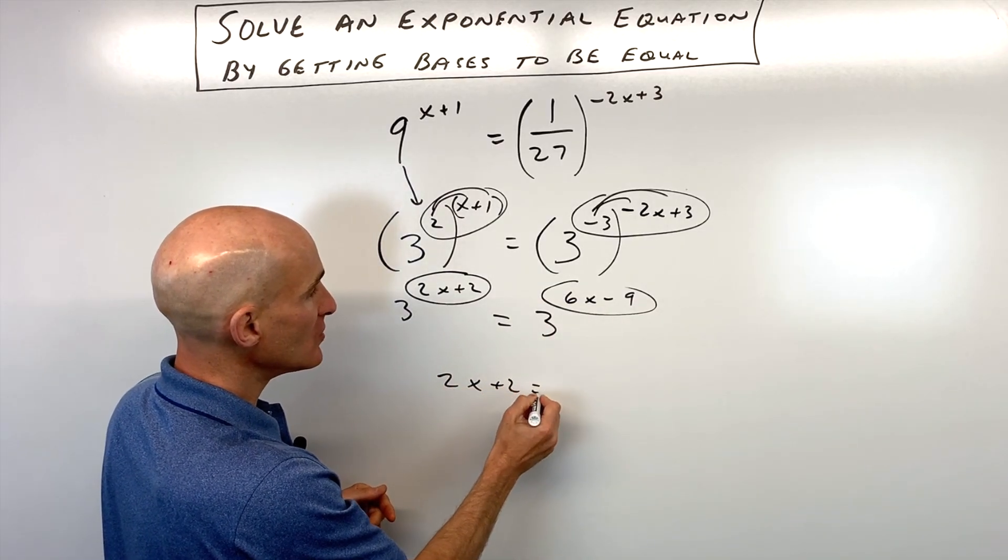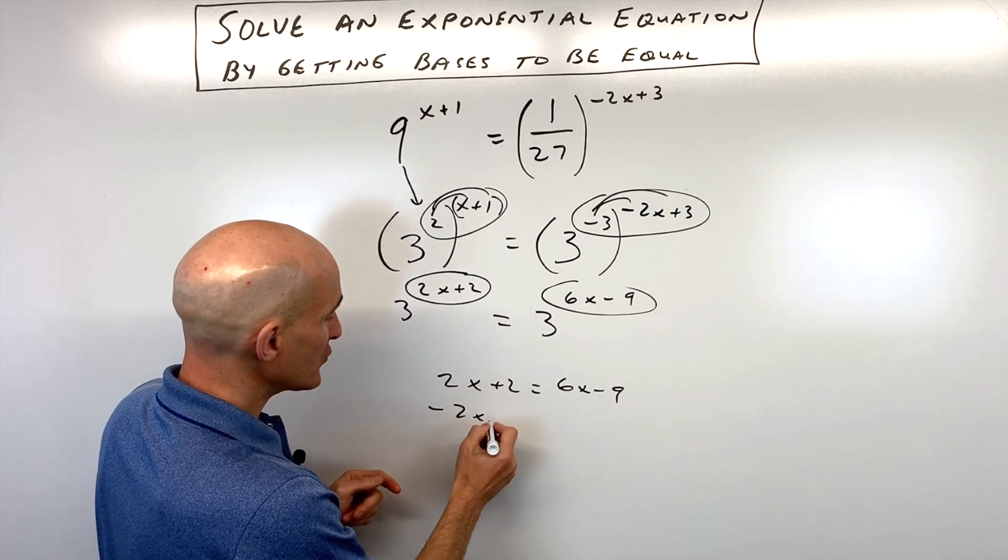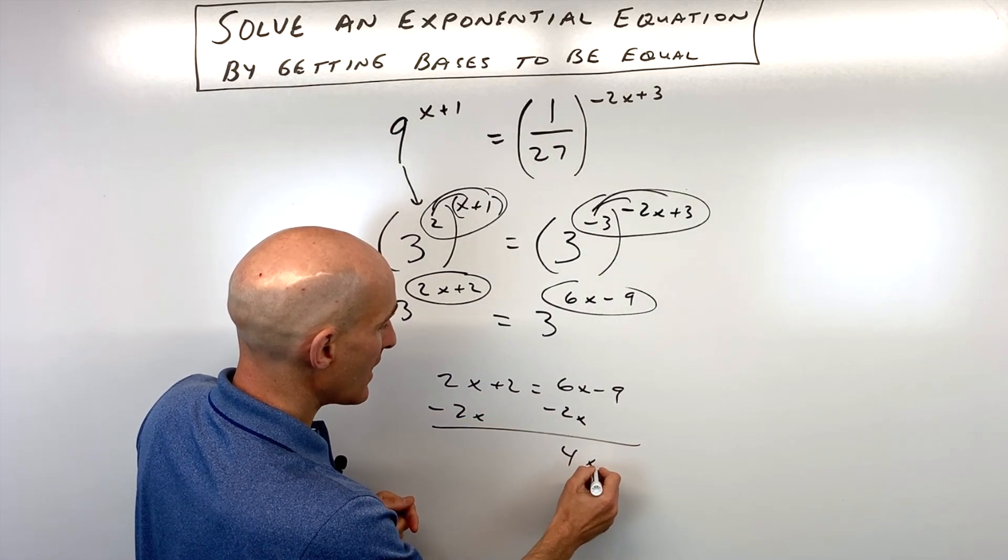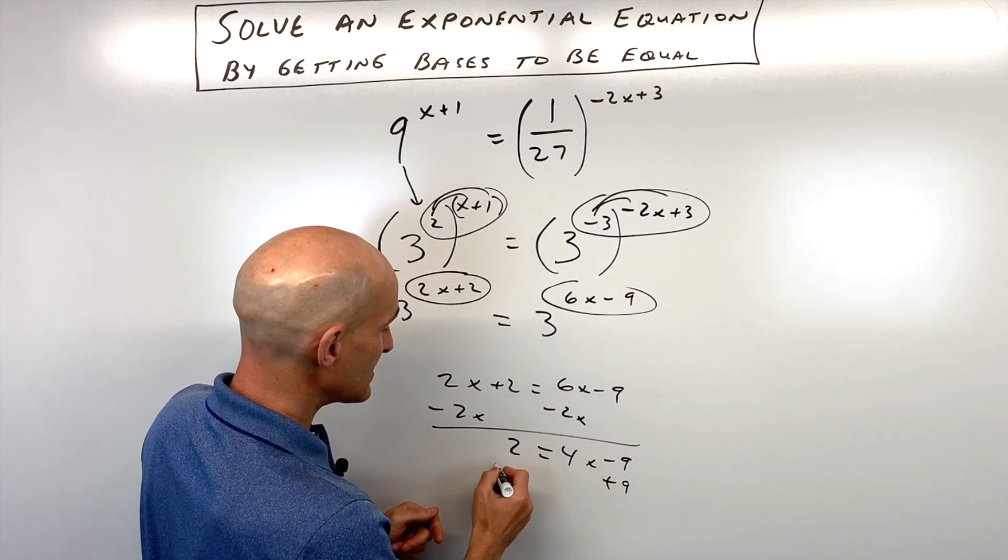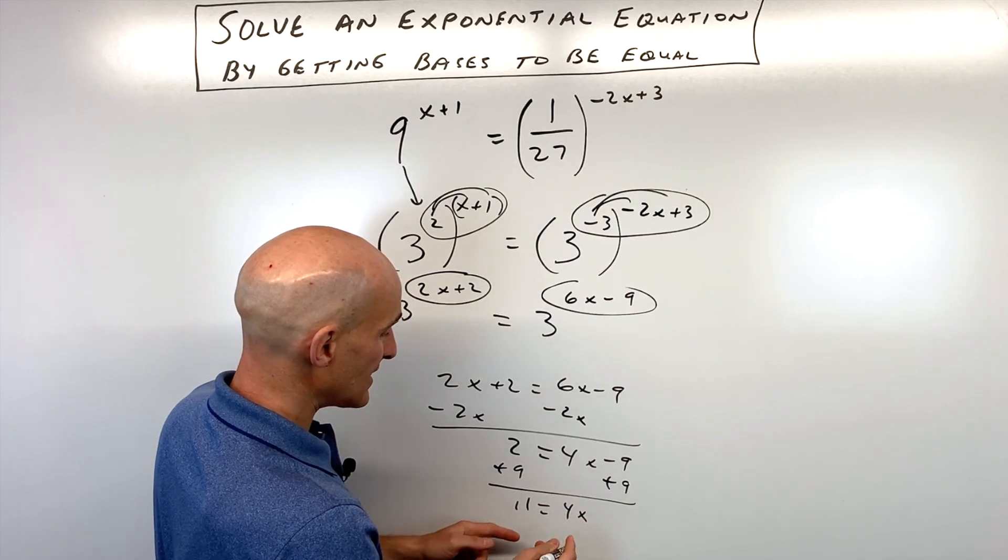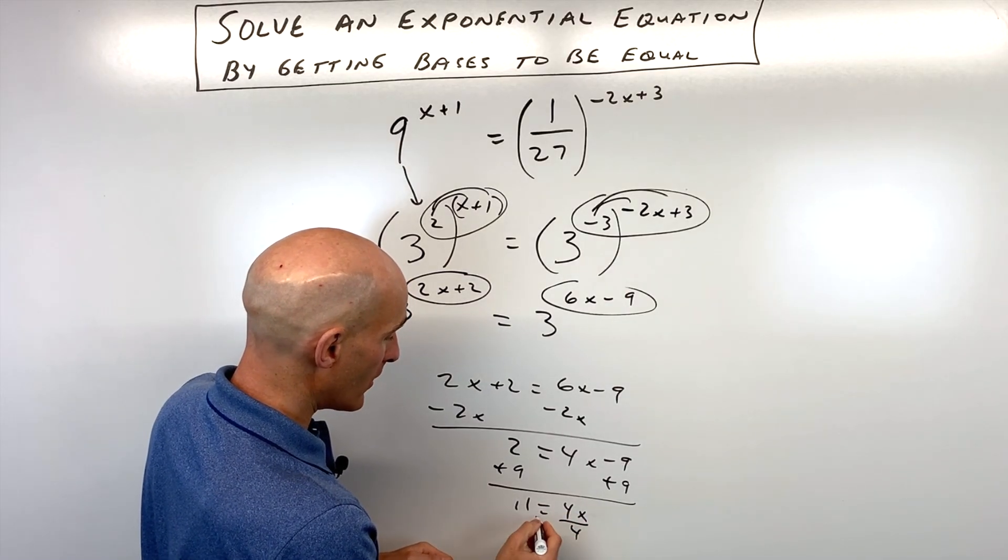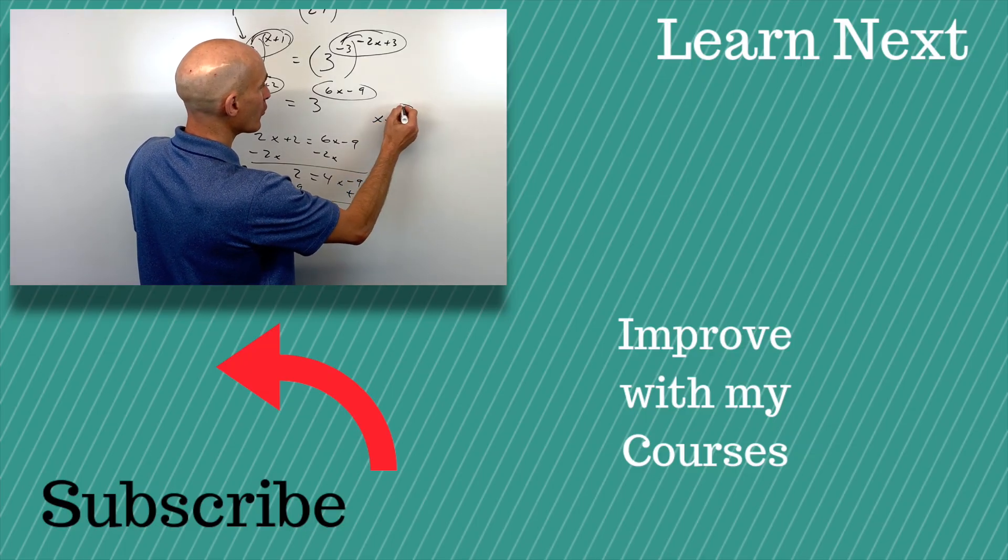So we have 2x+2 equals 6x-9. If we subtract 2x from both sides, that gives us 4x-9 equals 2. And if we add 9 to both sides, we've got 11 equals 4x. And if we divide both sides by 4, x is equal to 11/4.